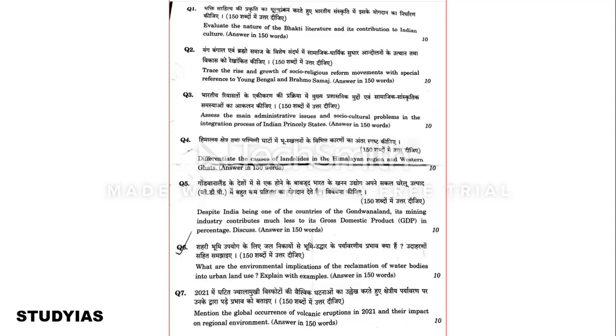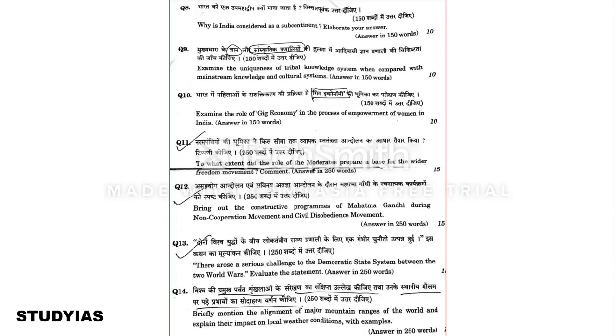Question seven: Mention the global occurrence of volcanic eruptions in 2021 and their impact on the regional environment. We saw that volcanic eruptions affected a lot of islands. Question eight: Why is India considered a subcontinent? Elaborate your answer. Question nine: Examine the uniqueness of tribal knowledge systems when compared to mainstream knowledge and cultural systems.